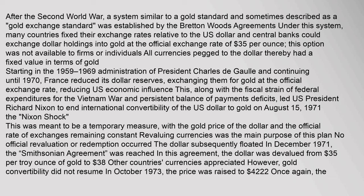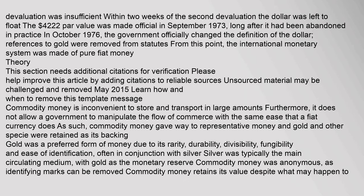This was meant to be a temporary measure, with the gold price of the dollar and the official rate of exchange remaining constant; revaluing currencies was the main purpose of this plan. No official revaluation or redemption occurred. The dollar subsequently floated. In December 1971, the Smithsonian Agreement was reached, devaluing the dollar from $35 per troy ounce of gold to $38. In October 1973, the price was raised to $42.22; within two weeks of the second devaluation the dollar was left to float. In October 1976, the government officially changed the definition of the dollar, removing references to gold from statutes. From this point, the international monetary system was made of pure fiat money.